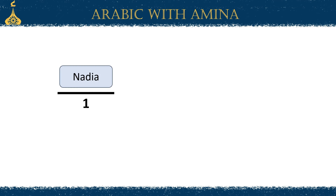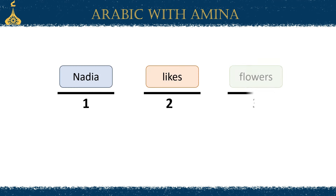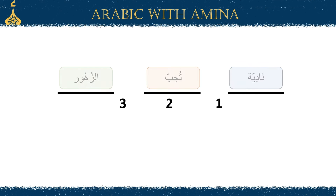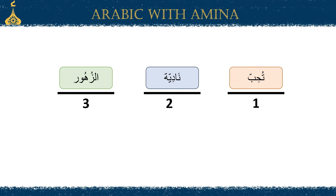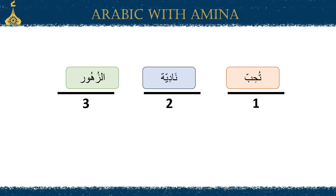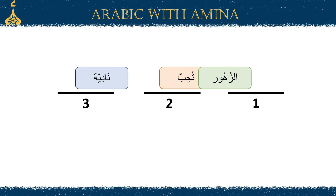Sentence arrangement comes naturally to you in English — you know where each word belongs. But what about Arabic? Is it the same as English, or does Arabic follow a different word arrangement in verbal sentences?